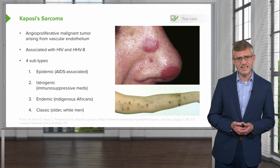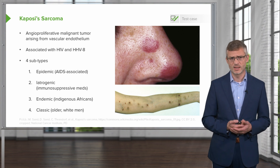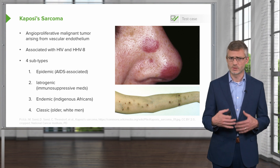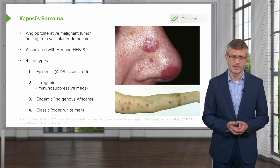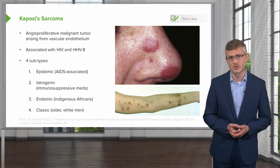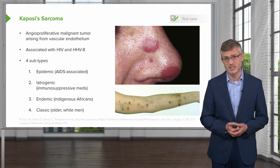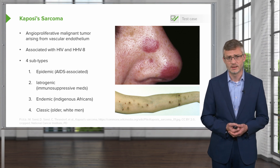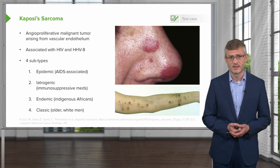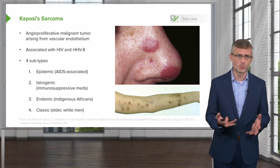And then there's a classic version, which, interestingly enough, is one of the least common varieties. It was referred to as classic Kaposi's sarcoma before it became associated with the HIV-AIDS epidemic, and it's seen in older white men.